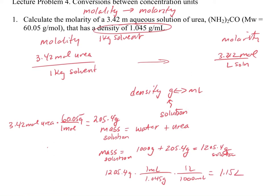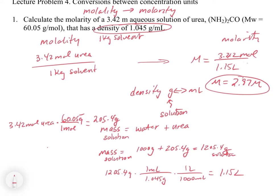That volume goes into our calculation: molarity = 3.42 moles / 1.15 liters = 2.97 molar. The key thing here is to recognize what the density gives us — a relationship between grams of solution and milliliters. The solution is made up of two components, water and urea, so we must include both the mass of water and the mass of urea derived from the number of moles. Once we have the total mass, we convert easily to liters and get the molarity.